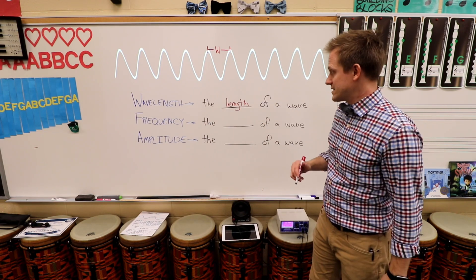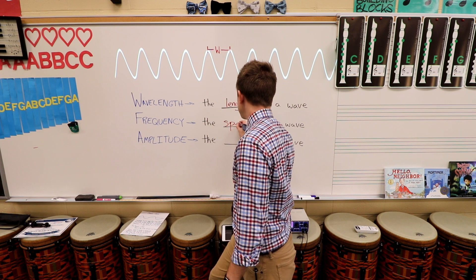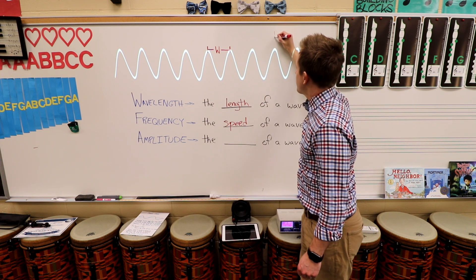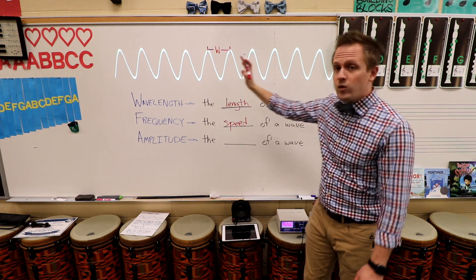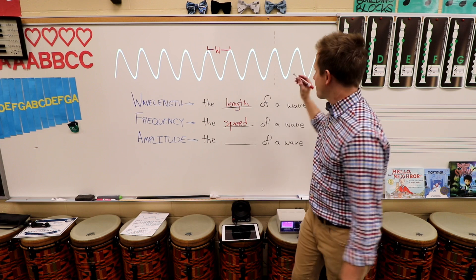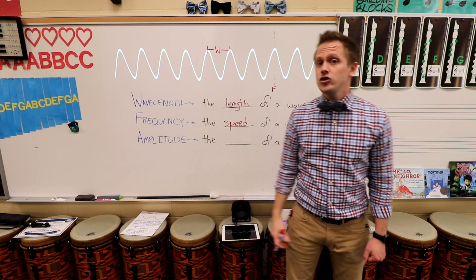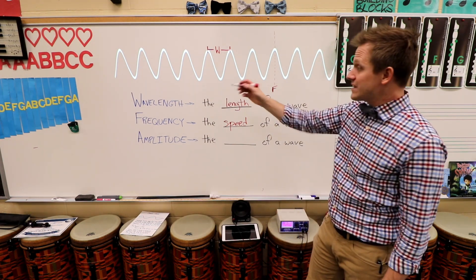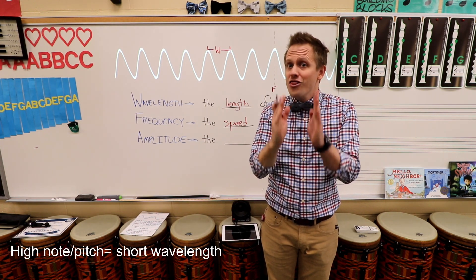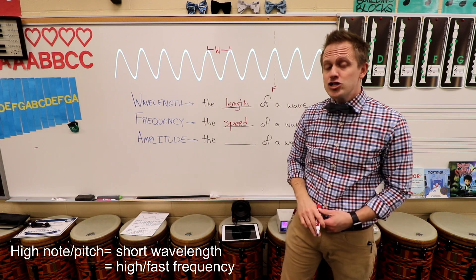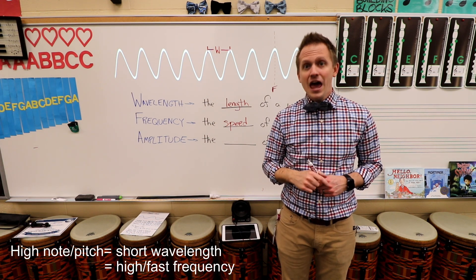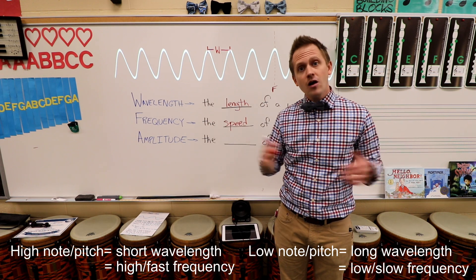Next up, frequency. The frequency is simply the speed of a wave. Imagine that you put an invisible point and counted the number of waves to pass that point in one second — that's called the frequency. We measure frequency in units called hertz. It's very much related to the wavelength: the higher the pitch, the shorter the wavelength; the shorter the wavelength, the higher the frequency. So if you have high notes, you're going to have short wavelengths and fast frequencies. For low notes, you're going to have long wavelengths and slower frequencies.